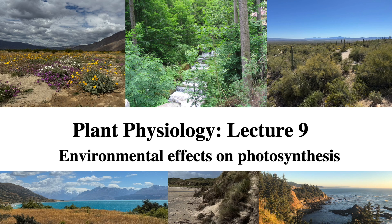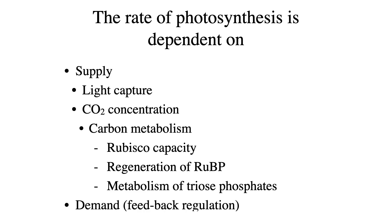Plant Physiology, Lecture 9: Environmental Effects on Photosynthesis. The rate of photosynthesis is dependent upon the supply and demand of light and its ability to capture light, the CO2 concentration in the air. It's also based upon the carbon metabolism in the leaf, which involves the rubisco capacity, the regeneration of RuBP, and the metabolism of triosephosphates. And on the demand side, which is largely controlled by growth or sinks — the development of new parts of the plant, the development of fruits, or the storage of carbon in the form of starch in the roots or in the trunk.